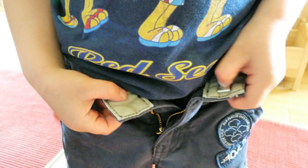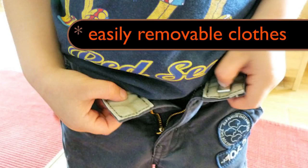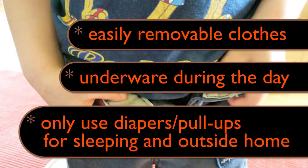To increase their independence, dress your child in clothes that will be easy for them to remove. During toilet training, it is important for children to wear underwear during the day. They need to feel when they are wet. If necessary, they may wear rubber pants or a pull-up over their underwear.